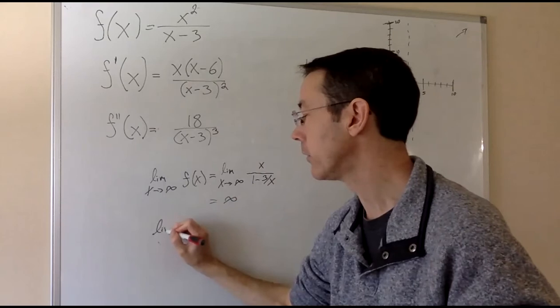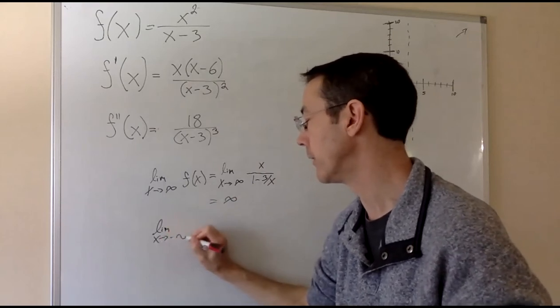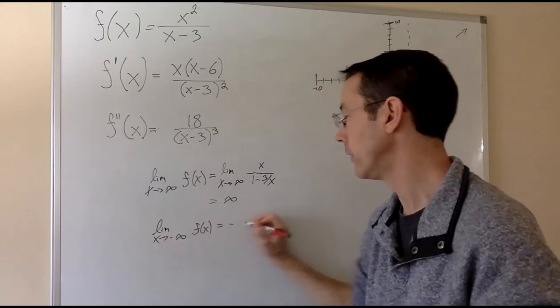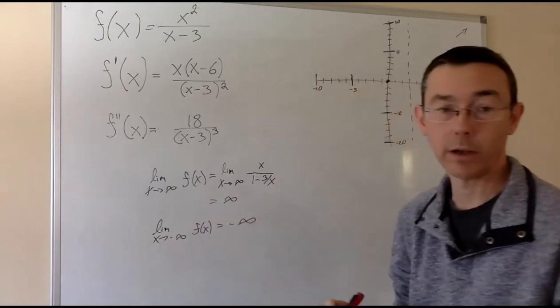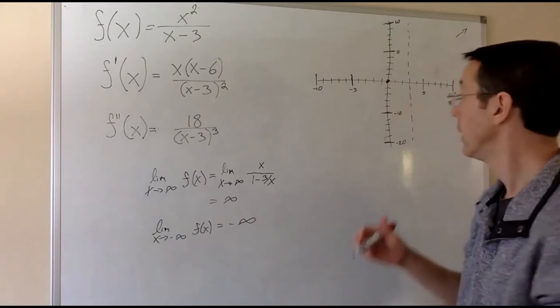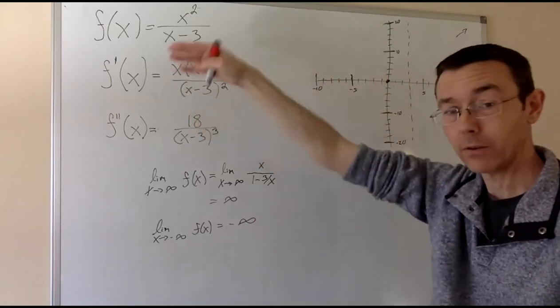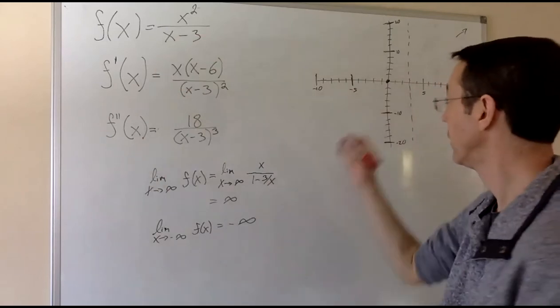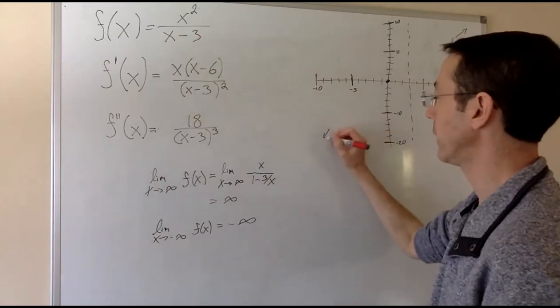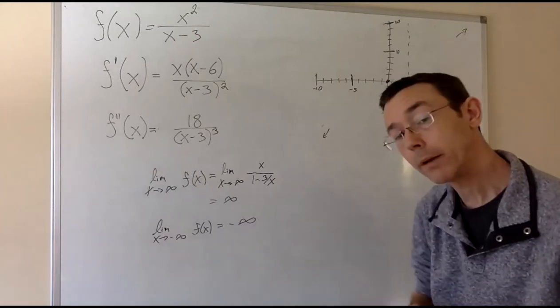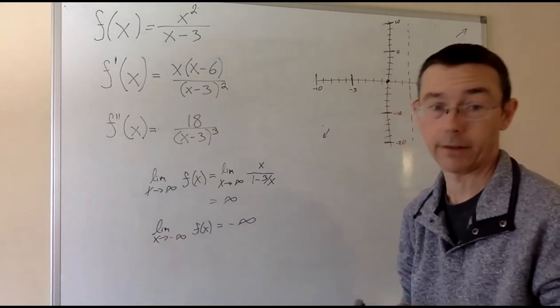Similarly, we need to look at the limit as x goes to negative infinity. And that's done exactly the same way, and in this case, we get negative infinity. That means that when x gets further and further to the left, y gets further and further down. This is a place where we could talk about slant asymptotes. We're not going to do it in this lecture.